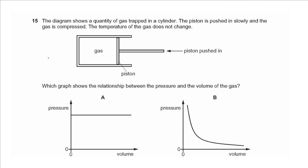Question 15 shows a quantity of gas trapped in a cylinder. The piston is pushed in slowly and the gas is compressed; the temperature does not change. Which graph shows the relationship between pressure and volume? At constant temperature, pressure and volume are inversely proportional, so we choose B, which shows the shape of an inverse relation.